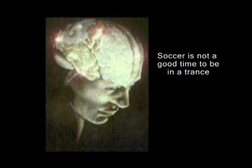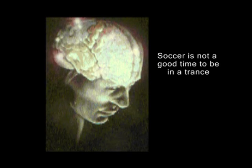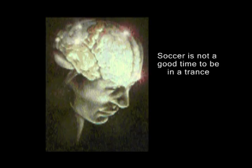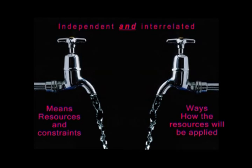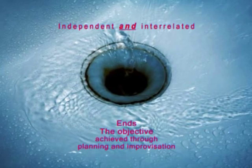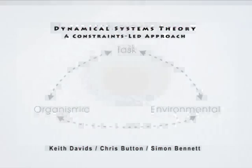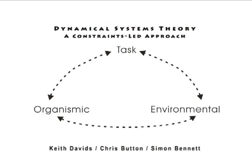Likewise, the perceptual system is in continual flow, trying to make sense of what it's observed. These two flows have to meet at the point of the task. It's the objective that provides the ends and requires the ways and means. One model for this point of view is the dynamical systems theory.